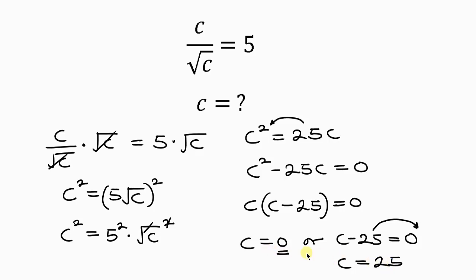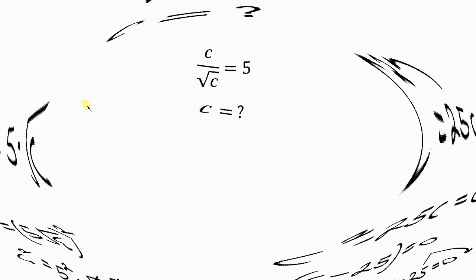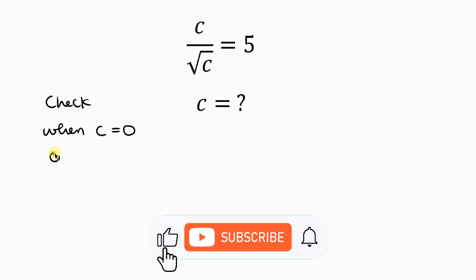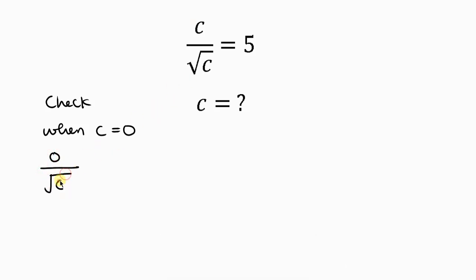Now let's check which of these two values is actually correct. So let's check. Now we check when C is equal to 0, which is our first value. So we have 0 over the square root of 0. Would this be equal to 5?